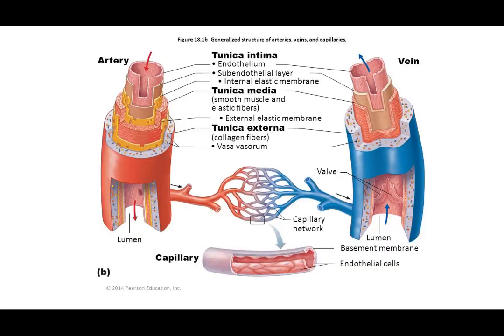Here's a diagram depicting an artery on one side. We have the tunica intima — the endothelium — as the innermost layer. The tunica media is your smooth muscle layer, and the tunica externa is your collagen fibers, with more elastin to allow for distention, especially in the larger elastic arteries.